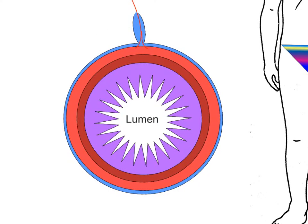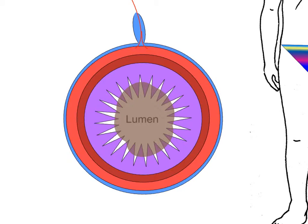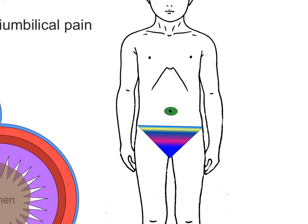When the lumen becomes obstructed, possibly by a faecolith or lymphoid swelling, the muscle layers contract in an attempt to overcome the obstruction. These contractions are painful and cause cramping that is detected by the visceral sensory nerves in the appendix. The cramping or colicky pain is associated with nausea, and the cramps are focused around where the umbilicus lies.